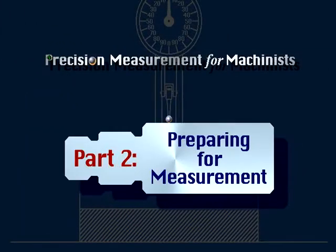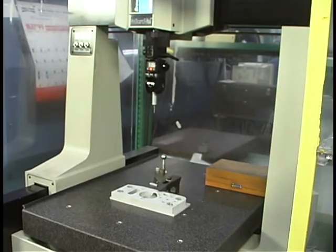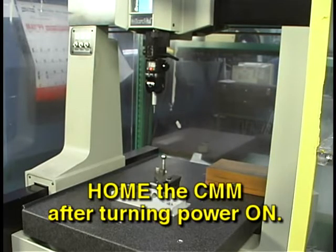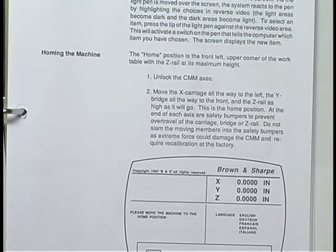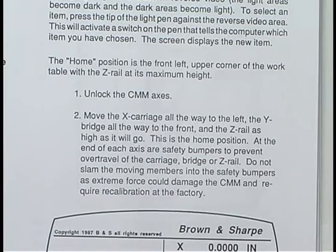Part 2: Preparing for Measurement. If power to the CMM has been turned off, it will be necessary to home the machine after power is turned on. Refer to the operator's manual for your machine to learn how to home your CMM.